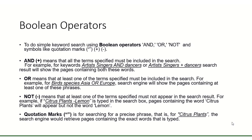Boolean operators. To do a simple keyword search using boolean operators, AND, OR, NOT, and symbols like quotation marks, plus, and hyphen are used.